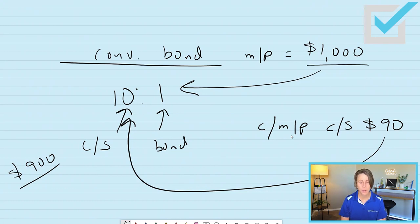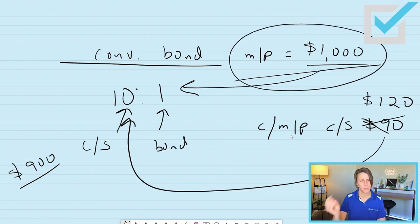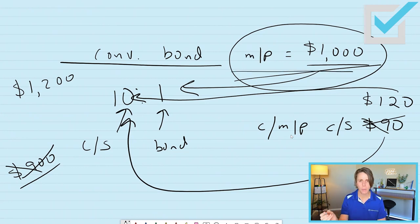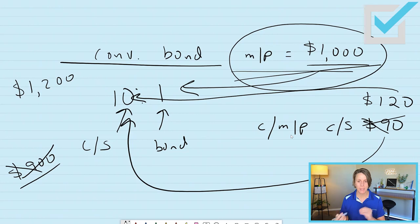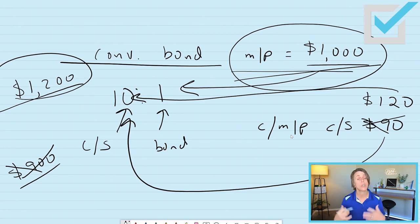However, what if common stock was trading not for $90 but for $120 a share? Let's pretend the convertible bond is trading for par value. What's underneath it now? 120 times 10 is worth $1,200. Would you want to give up your one bond to get your 10 shares? Absolutely — that's called above parity, convert. In reality, this convertible bond is going to trade at a market price reflective of the common stock underlying it — so it's going to trade at around $1,200.